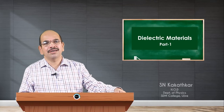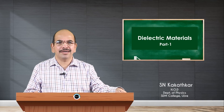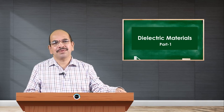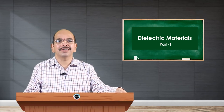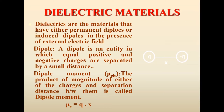In today's session we are going to discuss dielectric materials under solid state physics. Dielectric materials are insulators. They are classified into different categories based on the dipole moment they possess or do not possess. Dielectric materials are insulators that have either permanent dipoles or induced dipoles in the presence of an external electric field.